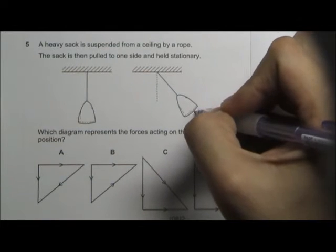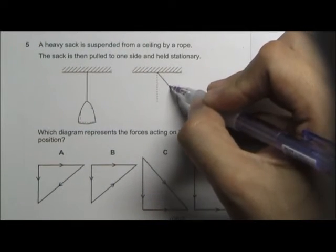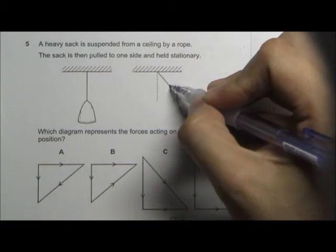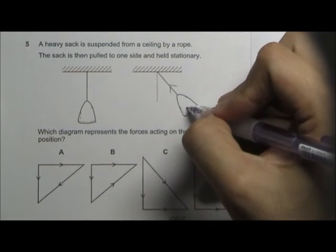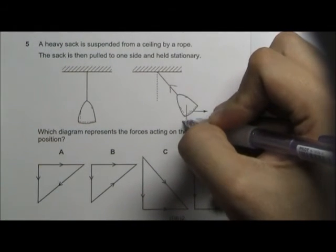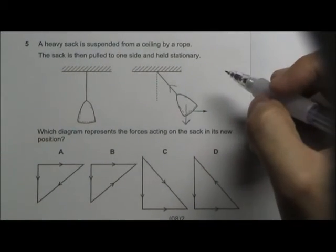Now let us indicate all the forces acting on the sack. There's a force to the right, there is a force which is tension in this direction, and there is a weight that is going downwards. So if it's in equilibrium,